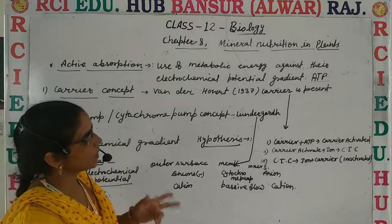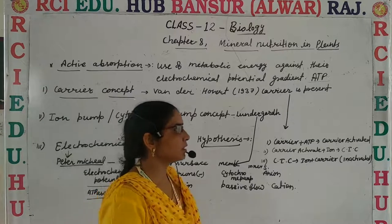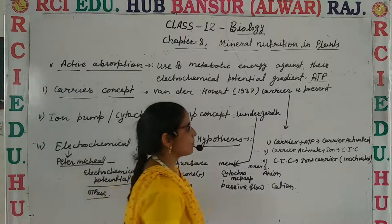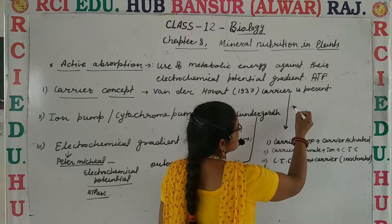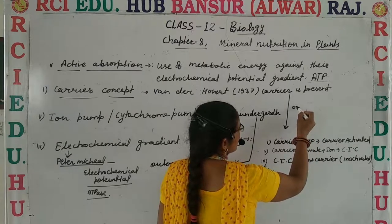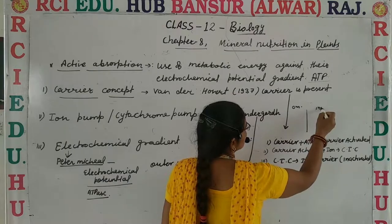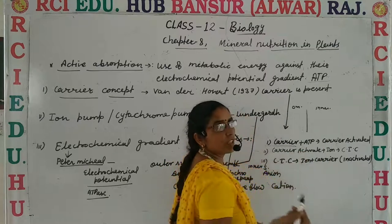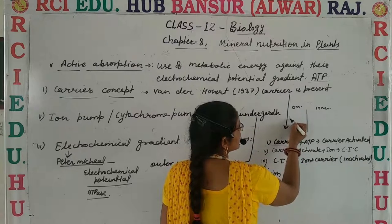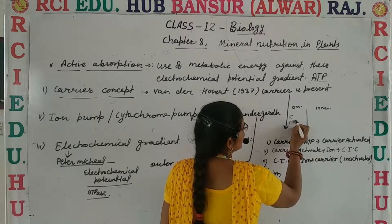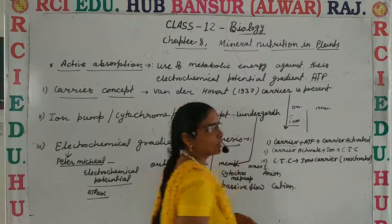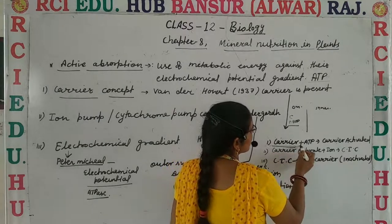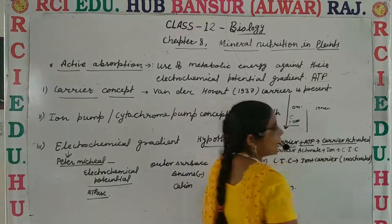Three processes take place in the Carrier Concept Theory. For example, consider the membrane with the outer side space and the inner surface. First, the carrier gets combined with ATP and becomes activated. There is a carrier C — it combines with ATP and becomes activated. This is the first process: the carrier combines with ATP and becomes activated.